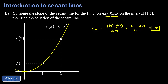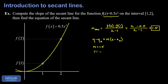Now we want to get the equation of the secant line passing through these two points. We'll use the point-slope formula: y minus y0 equals m times x minus x0, where (x0, y0) is a known point on the line and m is the slope. Our slope is 1.5, and we'll use the point (1, f(1)), where the x-coordinate is 1 and the y-coordinate is 0.5.